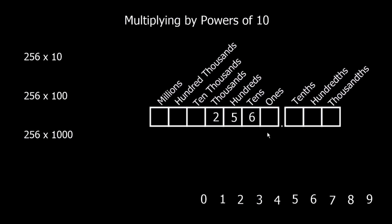We've now got a gap in the ones column — there's nothing there, so we have to fill it with a zero. So 256 multiplied by 10 gives us 2, 5, 6, 0. We've got 2 thousands, 5 hundreds, 6 tens, and no ones. So the answer is 2,560.